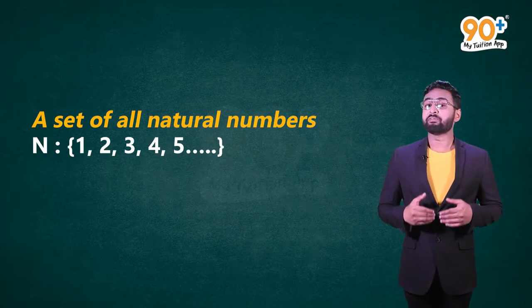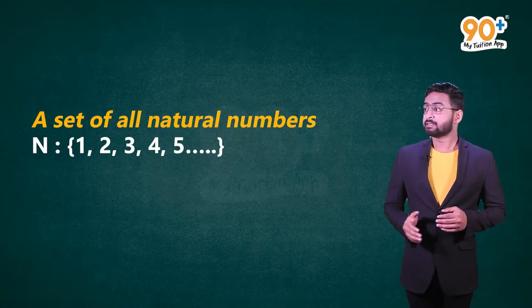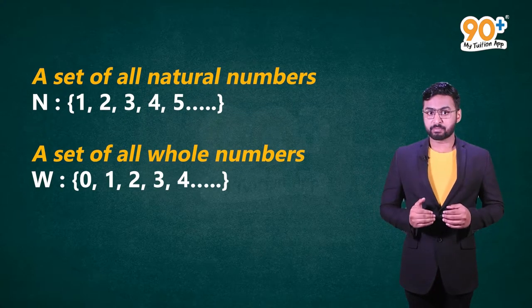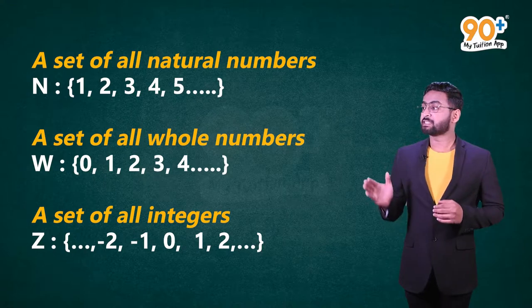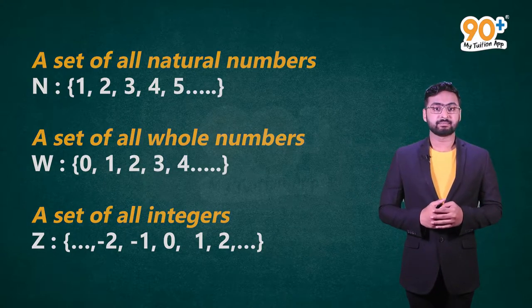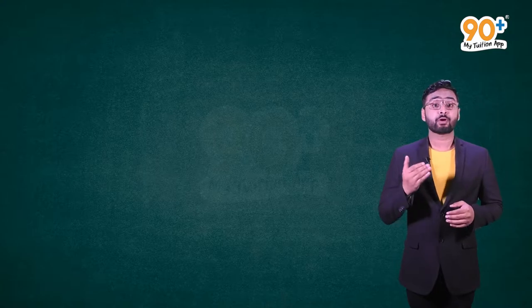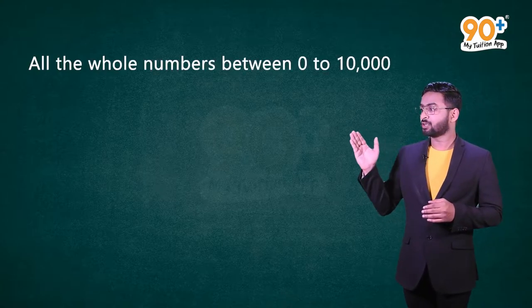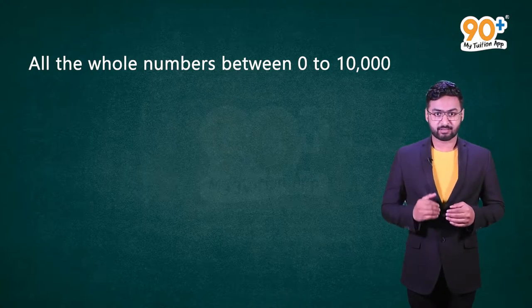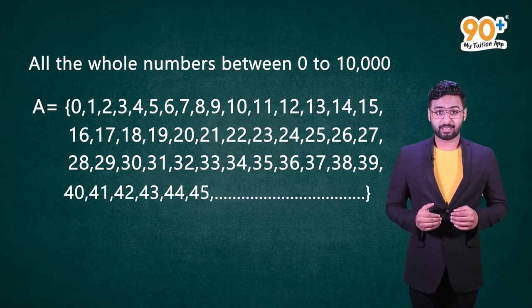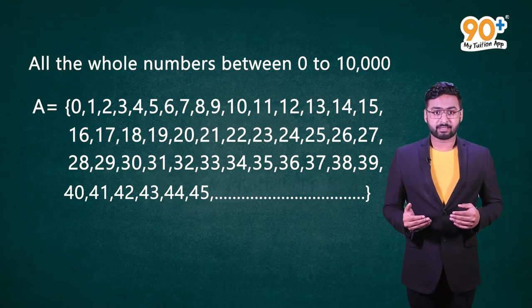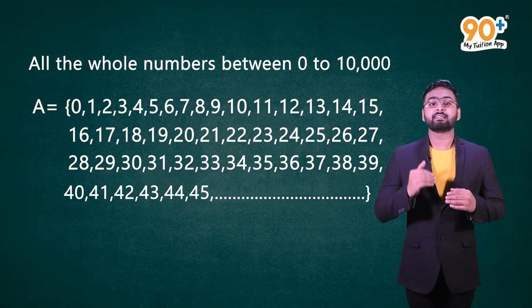There are special sets used particularly in mathematics: a set of all natural numbers denoted by capital N, a set of all whole numbers denoted by capital W, and a set of all integers denoted by capital Z. Now, what if I ask you to write a set of all the whole numbers between 0 and 10,000? Can we use the roster method? No — it is time-consuming and impractical. This is where the second method comes into play: the set builder method.